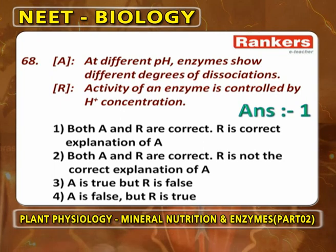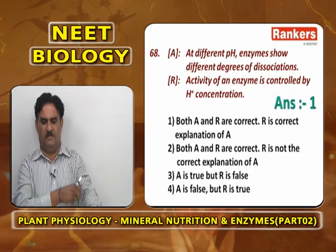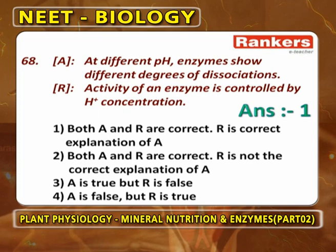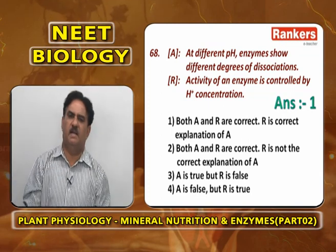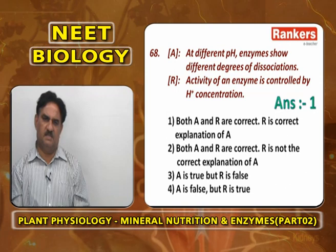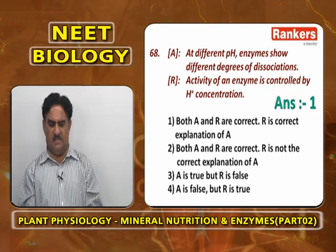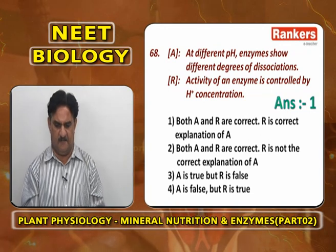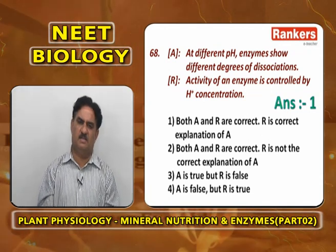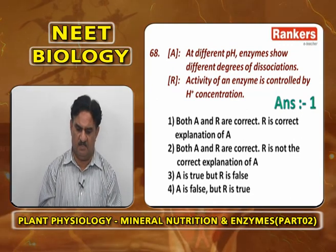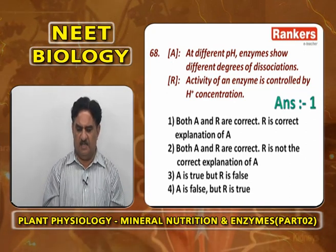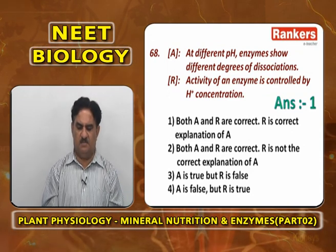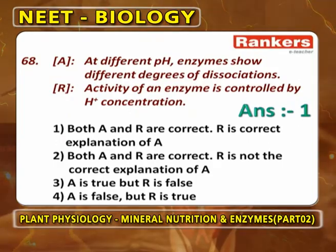At different pH values, enzymes show different degrees of dissociation. Pepsin is sensitive at pH 2, peroxidase at pH 5, amylase/urease/catalase at pH 7, and trypsin at pH 8. The activity of an enzyme is controlled by hydrogen ion concentration. So at different pH, enzymes show different degrees of dissociation because activity is controlled by hydrogen ion concentration. Both A and R are correct, and R is the correct explanation of A.